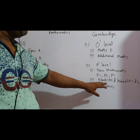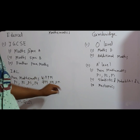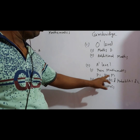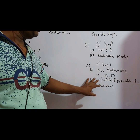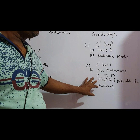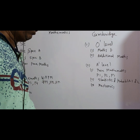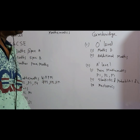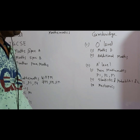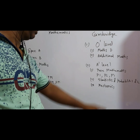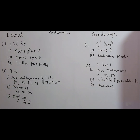In CAMBRIDGE A level there are also options, but not as wide as ADEXCEL. The options include pure mathematics P1, P2, P3; statistics S1, S2; and mechanics. Earlier there was mechanics 1 and mechanics 2, but from last year in our country there is only one mechanics paper.